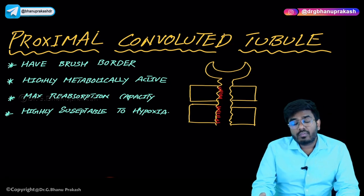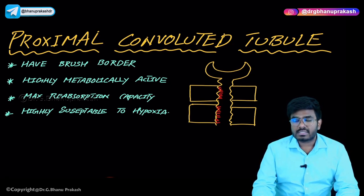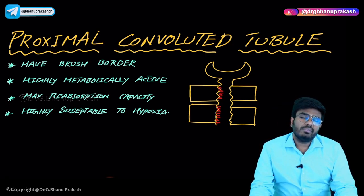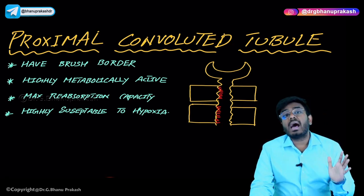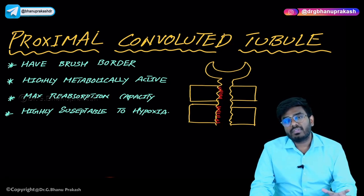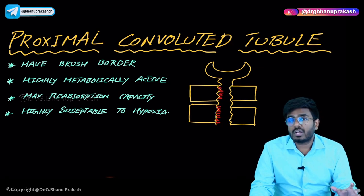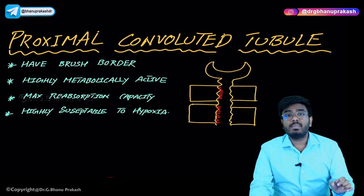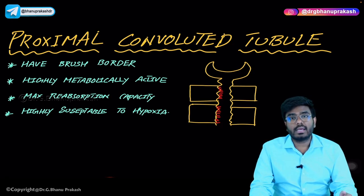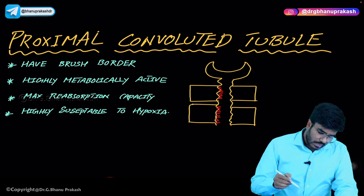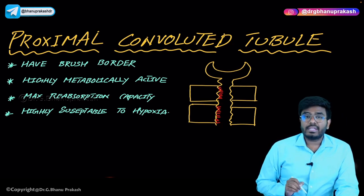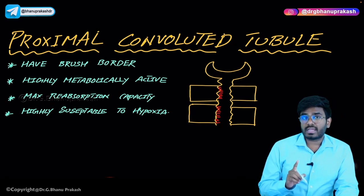The PCT is the site of maximum reabsorption of water, maximum reabsorption of sodium, maximum reabsorption of chlorine, and 100% reabsorption of glucose and amino acids. Logically, the PCT is highly metabolically active. So if asked which part of the nephron is most metabolically active, the answer is PCT. Because it is highly metabolically active, it also has the maximum number of mitochondria.